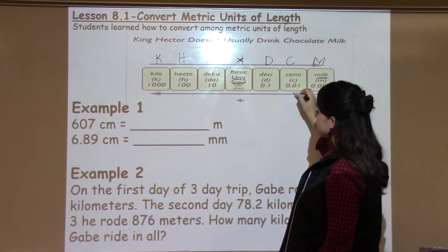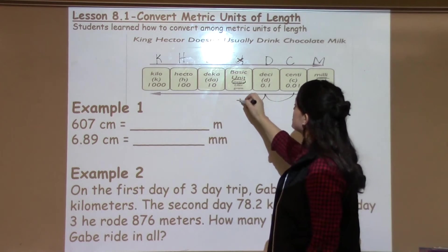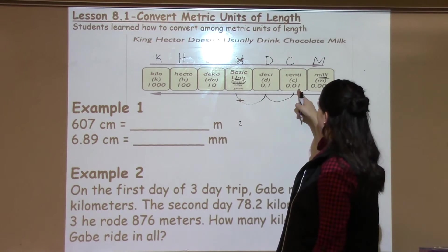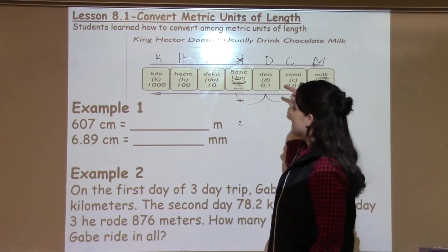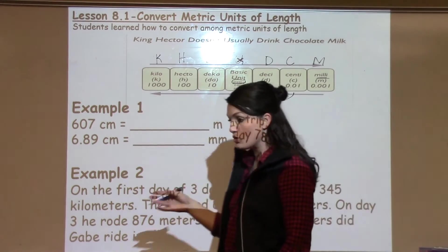So I have 607 centimeters and I want to move to meters. So that's one, two jumps. I always make a little note that I'm going to move two spaces and then I'm moving this way. So I make a little arrow drawing where I'm moving to, which direction.